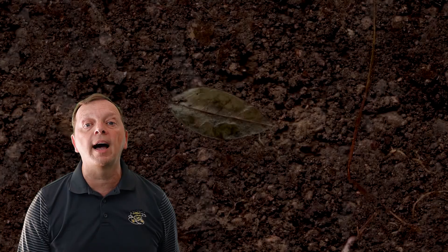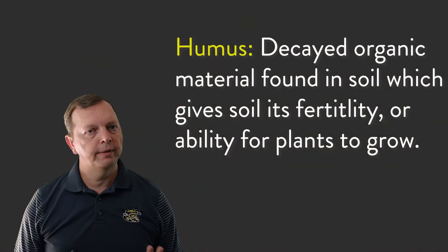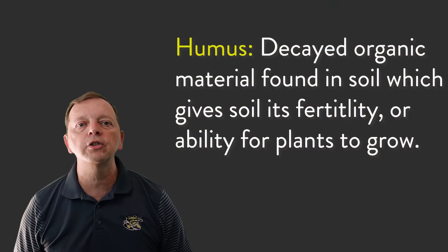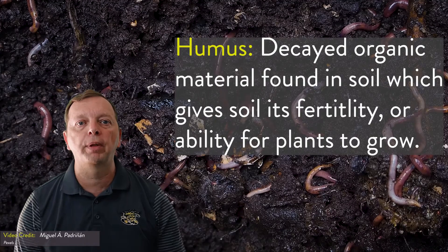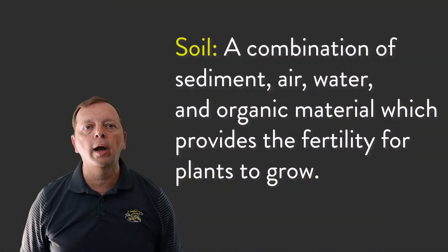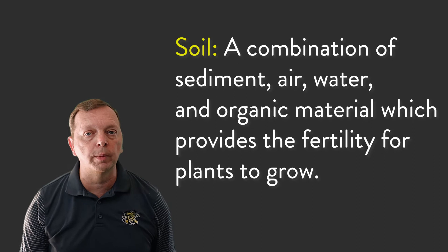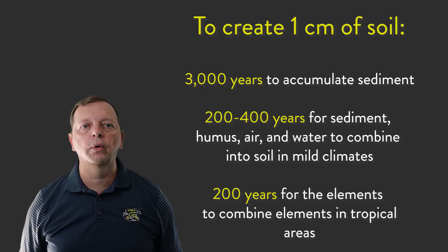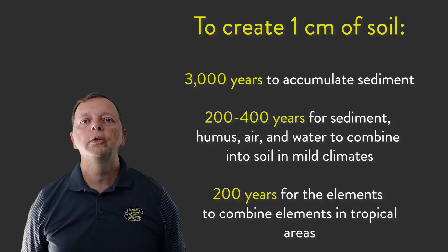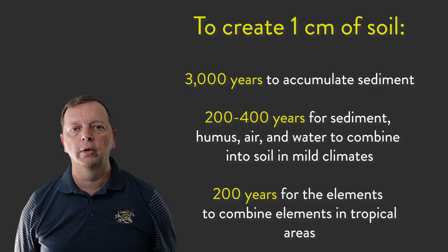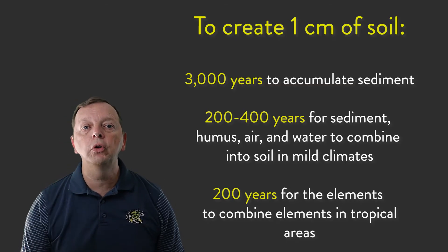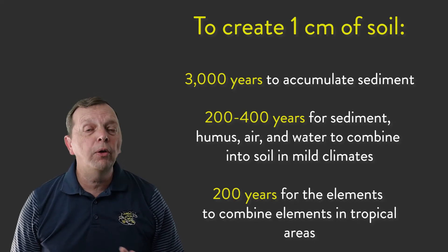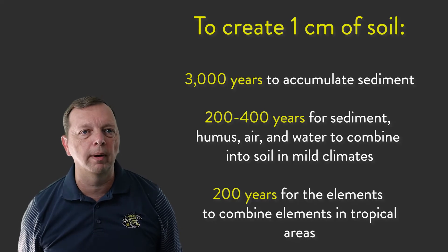This organic material is called humus — not to be confused with the Middle Eastern bean paste hummus. Humus is important because it is what actually provides the fertility to the soil for plants to be able to grow. In addition to sediment, air, water, and organic material, there is one other thing needed: time. It can take some 3,000 years for enough sediment and organic material to accumulate to make at least one centimeter of soil. In mild climates, it can take anywhere between 200 to 400 years for these four components to actually combine into soil, although in tropical wet areas it can take only about 200 years.